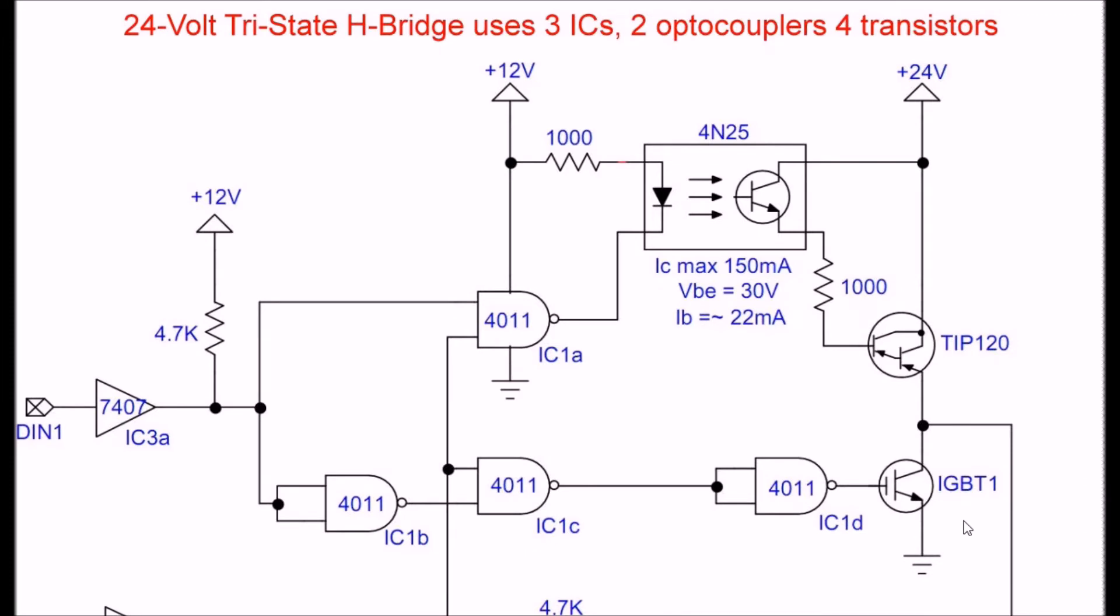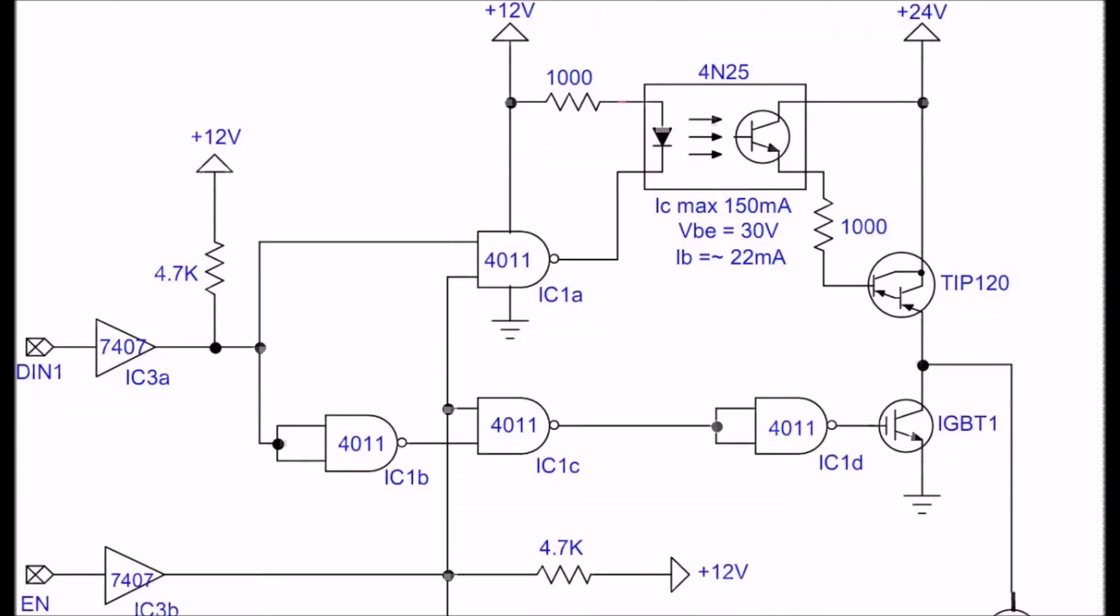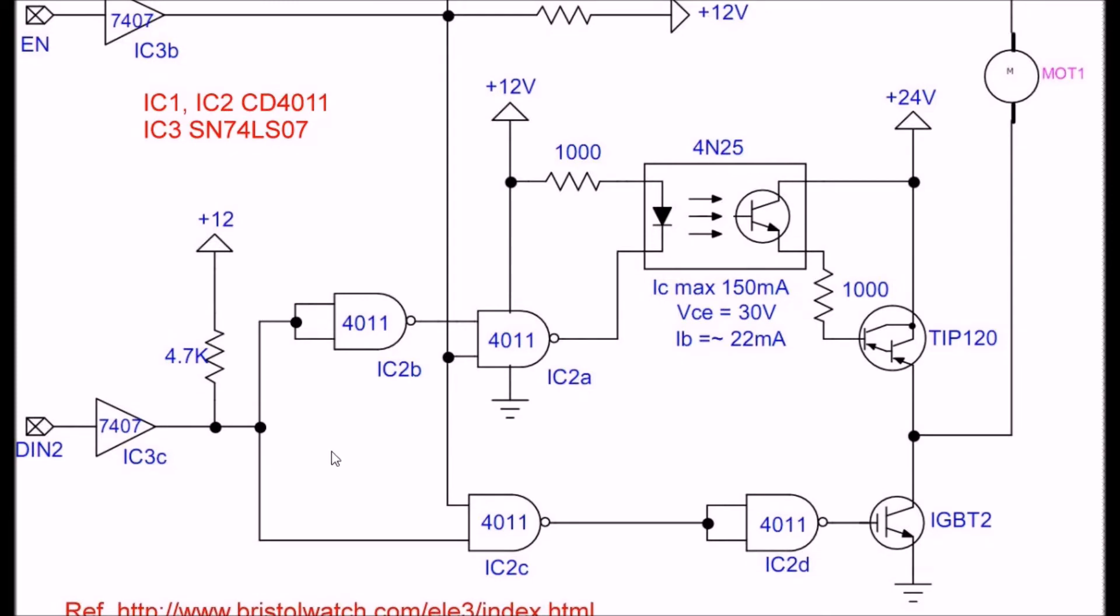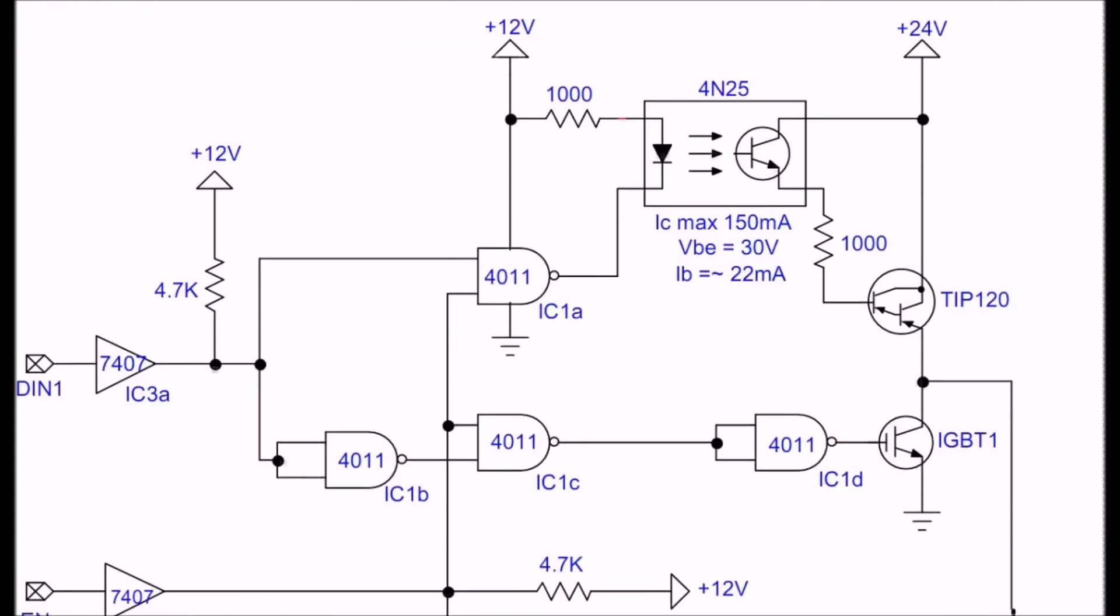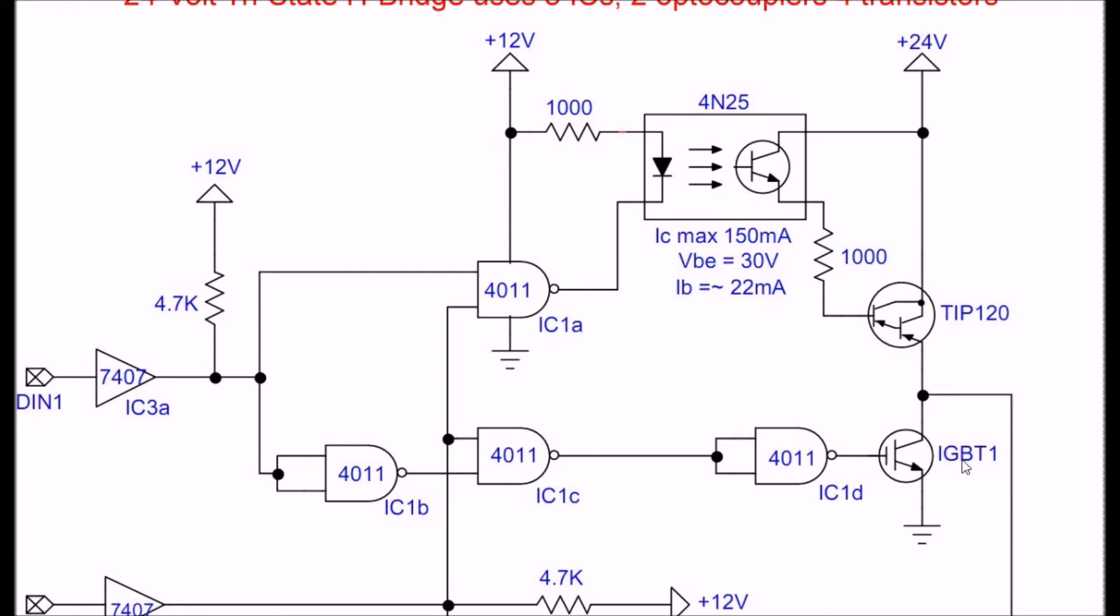Another version that we will eventually build up to is a 24-volt, preferably 5 amp or higher, H-bridge motor control. But this time we're going to be doing things a little different. We're going to use a couple of optocouplers - two of them to be precise. The original circuit I discussed earlier, but the outputs are going to be IGBTs and TIP 120 NPN transistors.